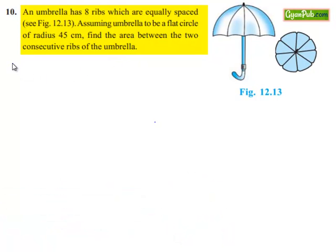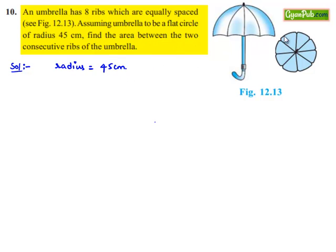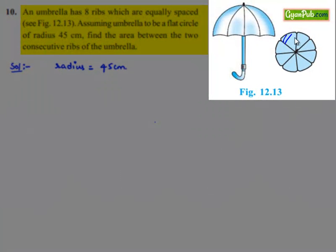Now moving on to the solution. An umbrella is given with 8 ribs and the umbrella is assumed to be a flat circle of radius 45 centimeters. We are asked to find the area between two consecutive ribs. If we consider the umbrella as a flat circle, the area between two consecutive ribs is represented by the shaded region.